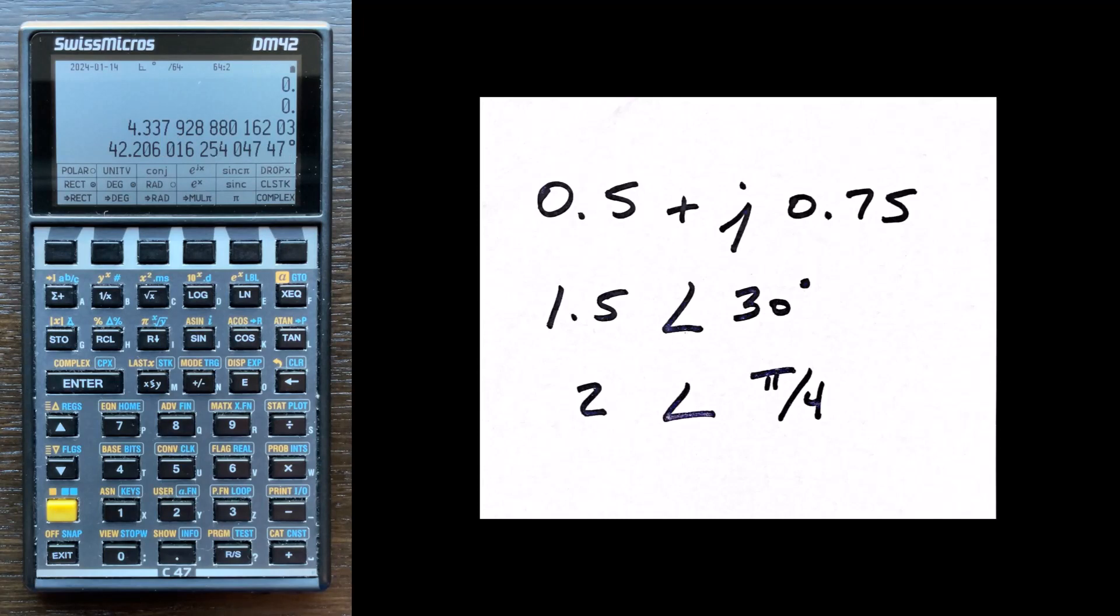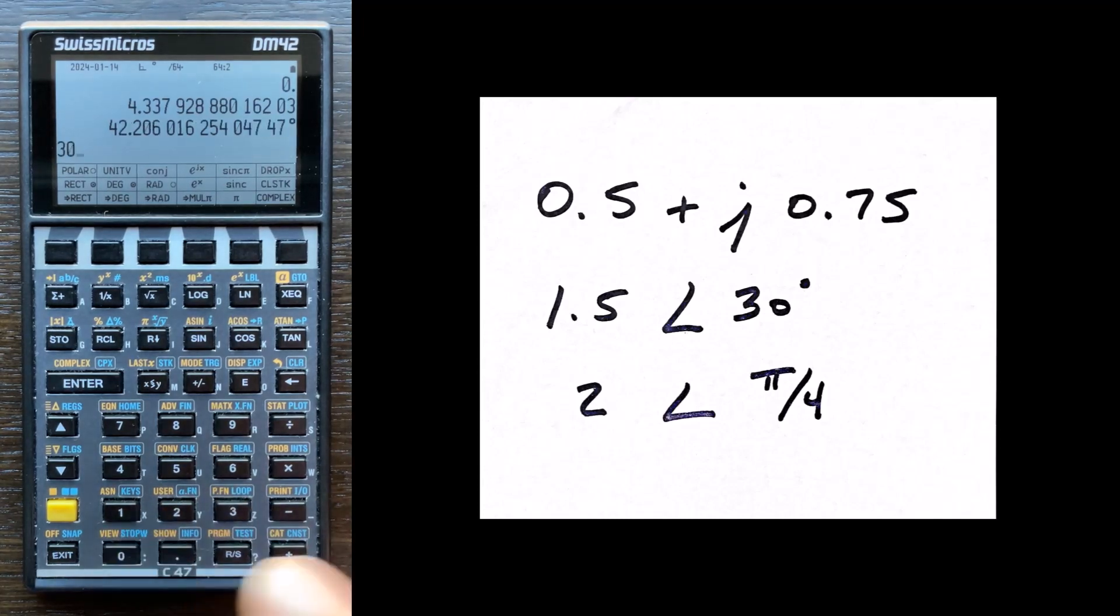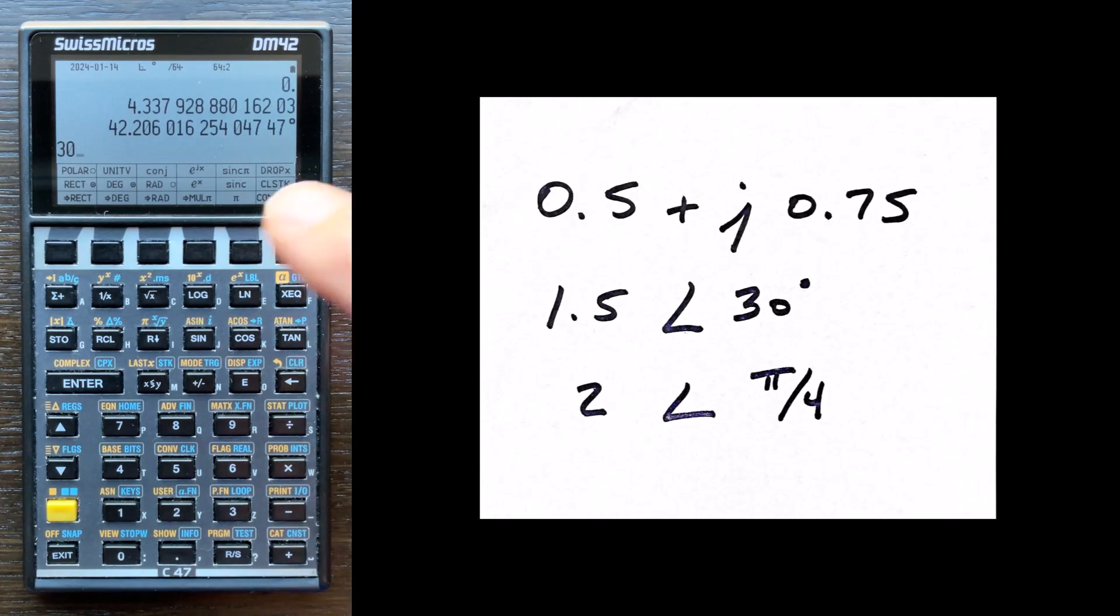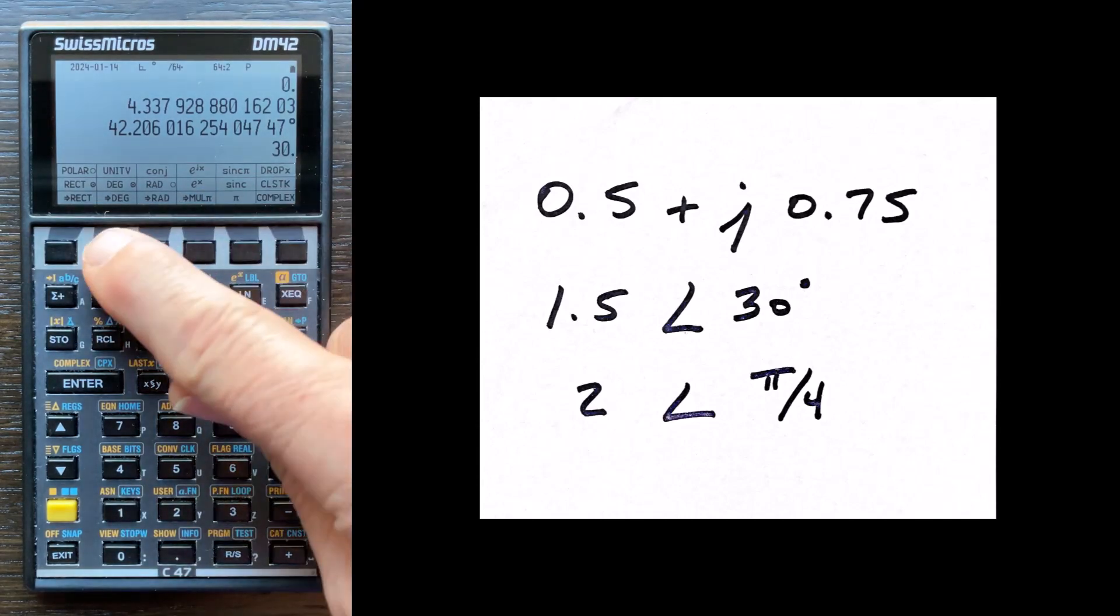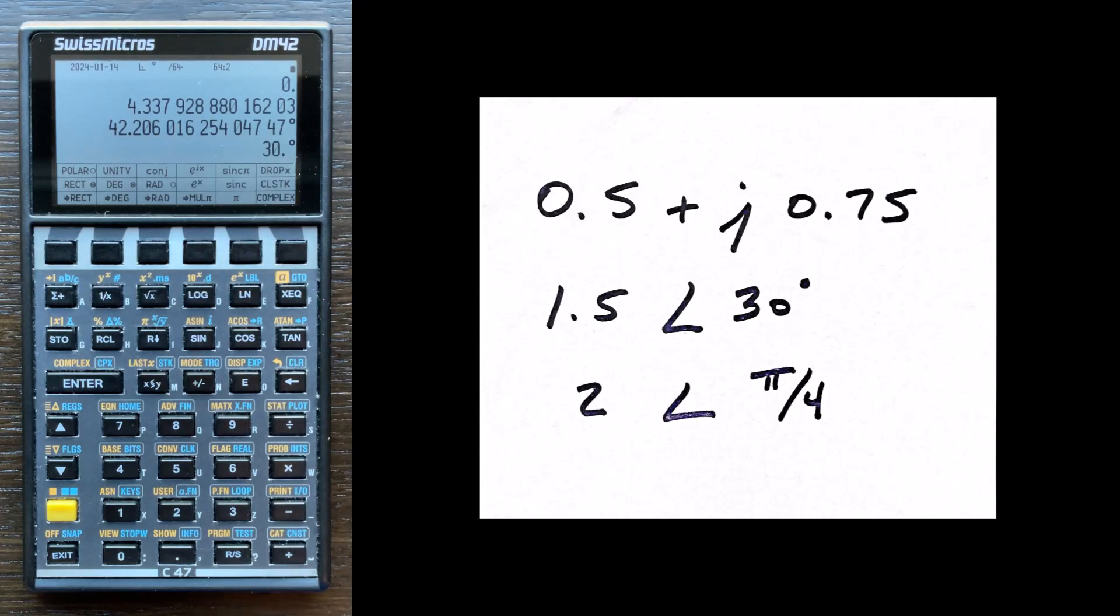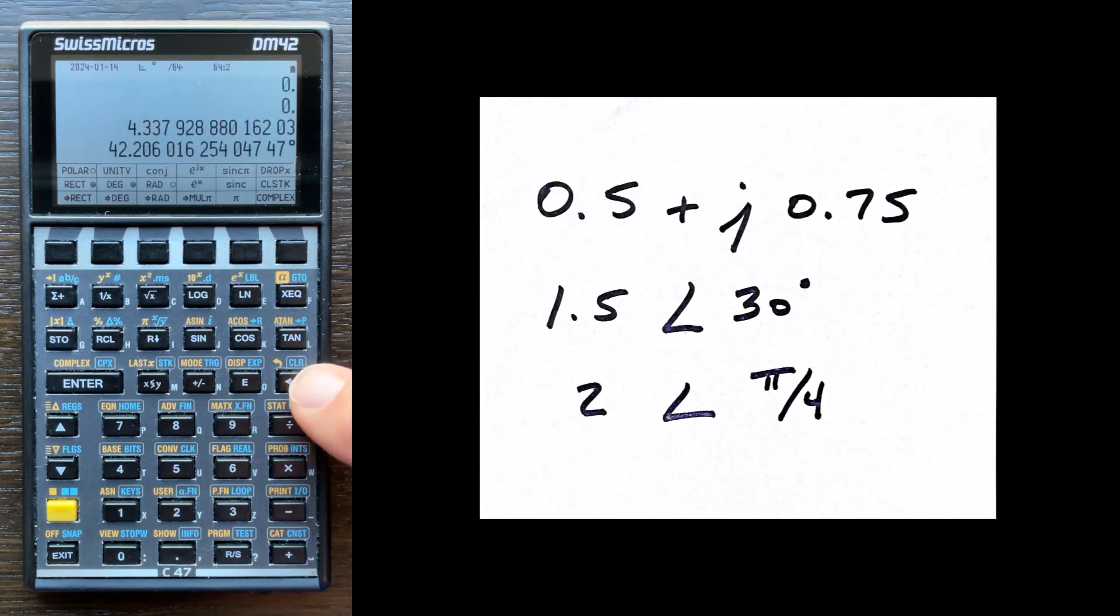The reason I like that is if I entered 30 wanting degrees but accidentally pushed radians, one option would be to delete and start over. But I prefer to just remove the radians label and press degrees to relabel it. That's another way to use that program. I'll press double backspace to get rid of that entry.